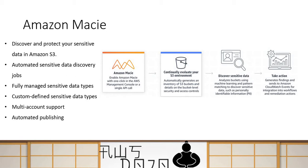Amazon Macie can identify sensitive information such as your PII — personal identifiable information — financial information like bank accounts or credit card numbers, credential information, and intellectual property like code. If those types of information are in your S3 bucket, it can discover that and based on the configuration of the bucket, it can also tell you what kind of threat is on that sensitive information. Configuration could mean whether the bucket is public or not, whether it's encrypted or not, and what kind of access is provided on that bucket.